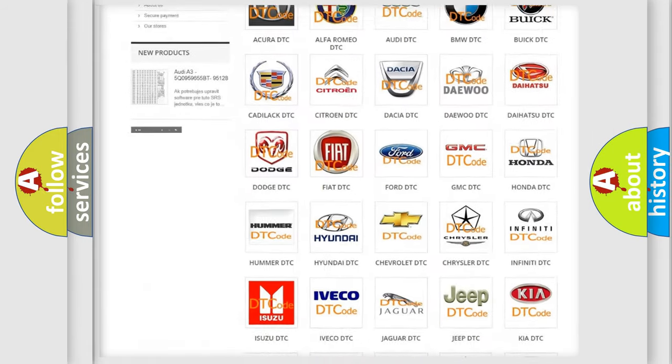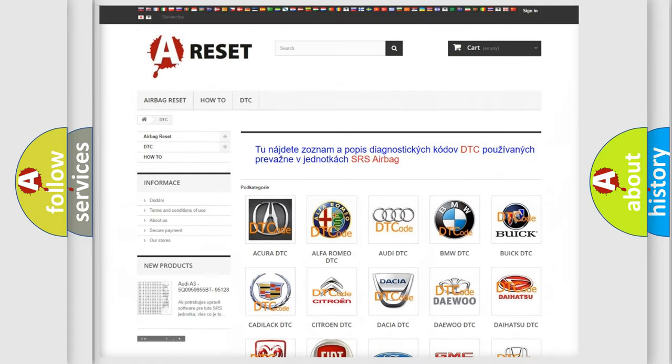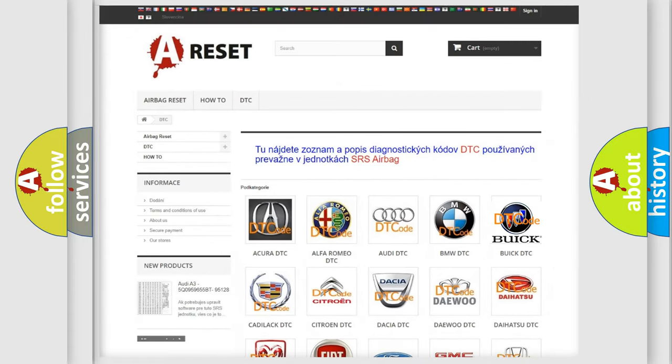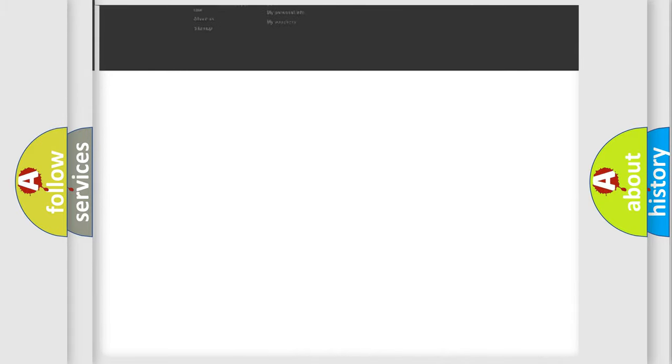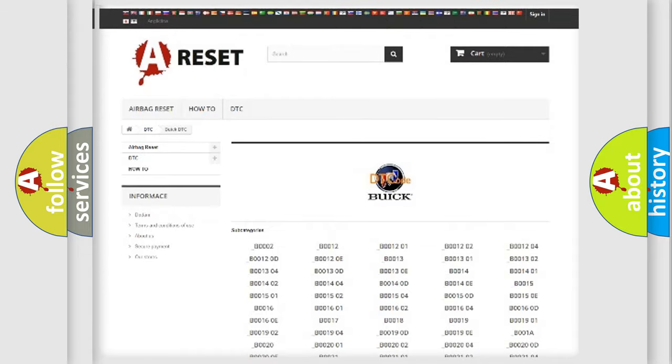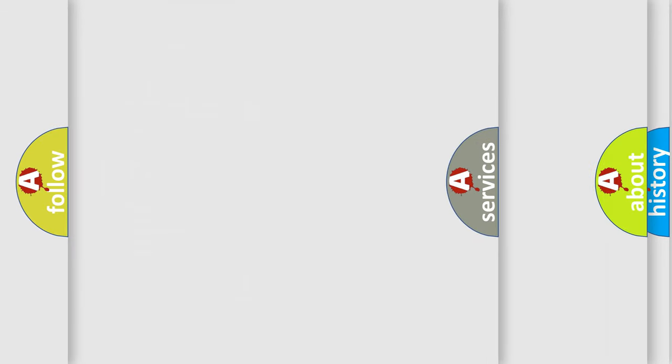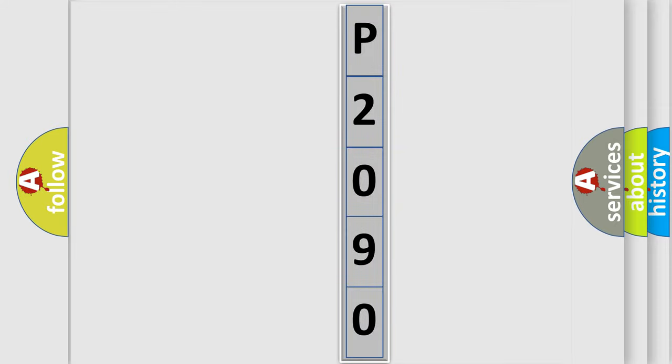Our website airbagreset.sk produces useful videos for you. You do not have to go through the OBD2 protocol anymore to know how to troubleshoot any car breakdown. You will find all the diagnostic codes that can be diagnosed in Buick vehicles, and many other useful things. The following demonstration will help you look into the world of software for car control units.